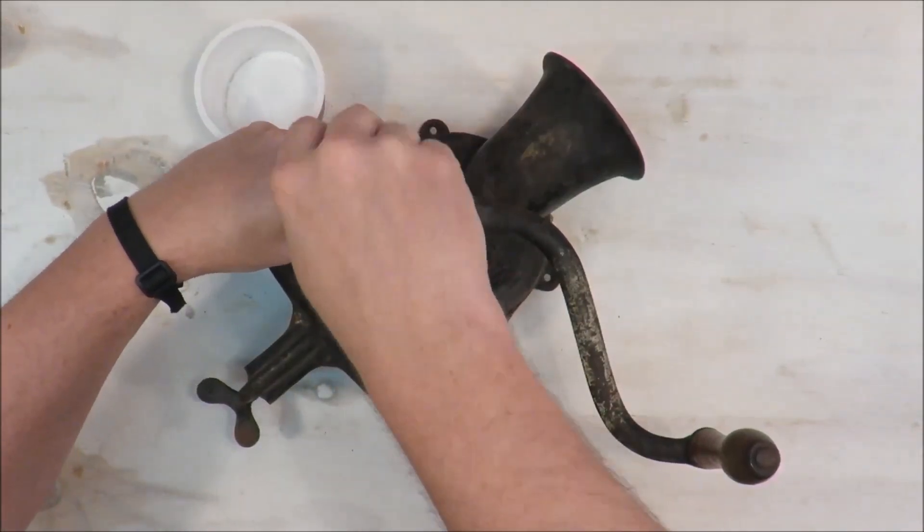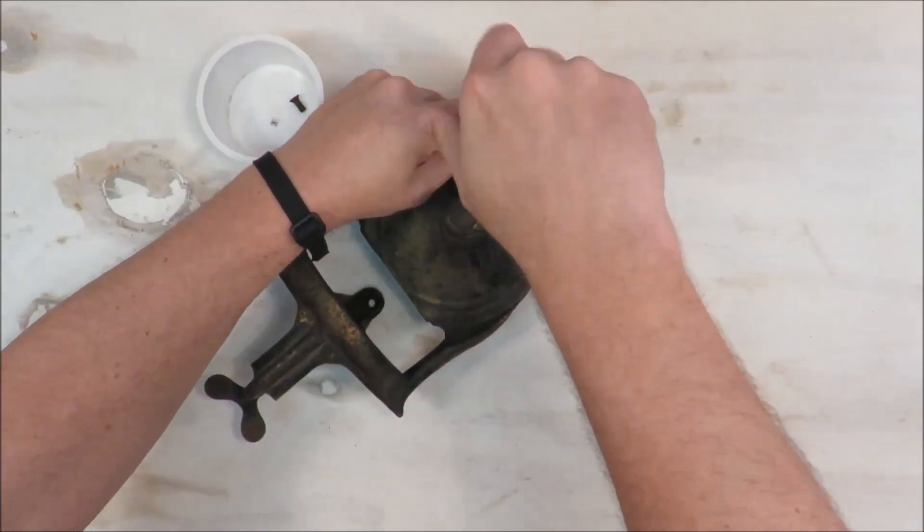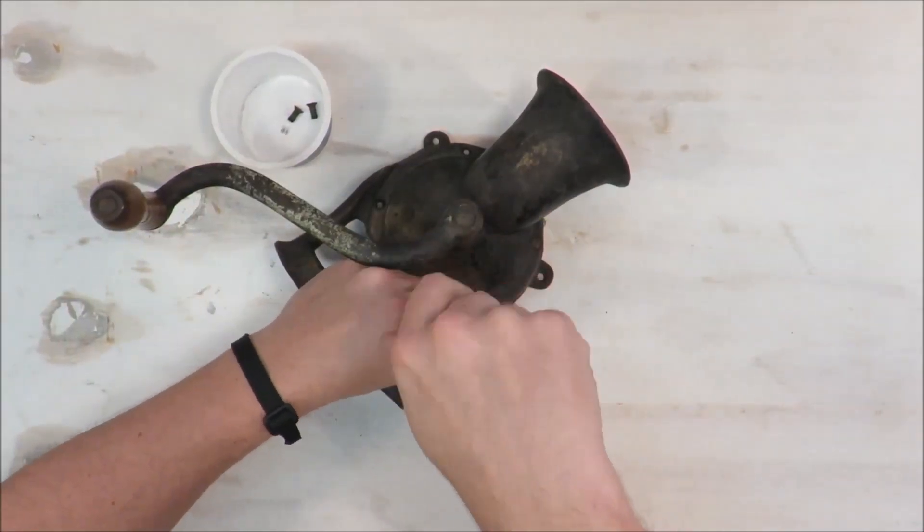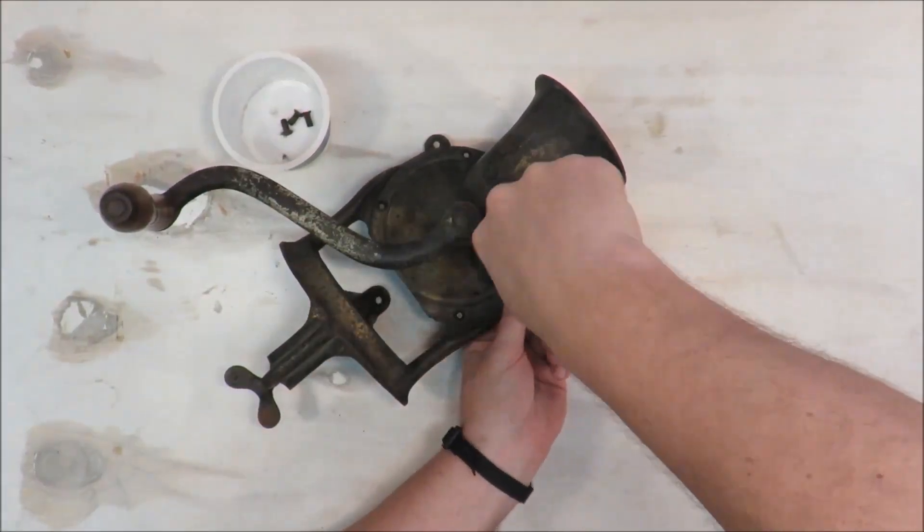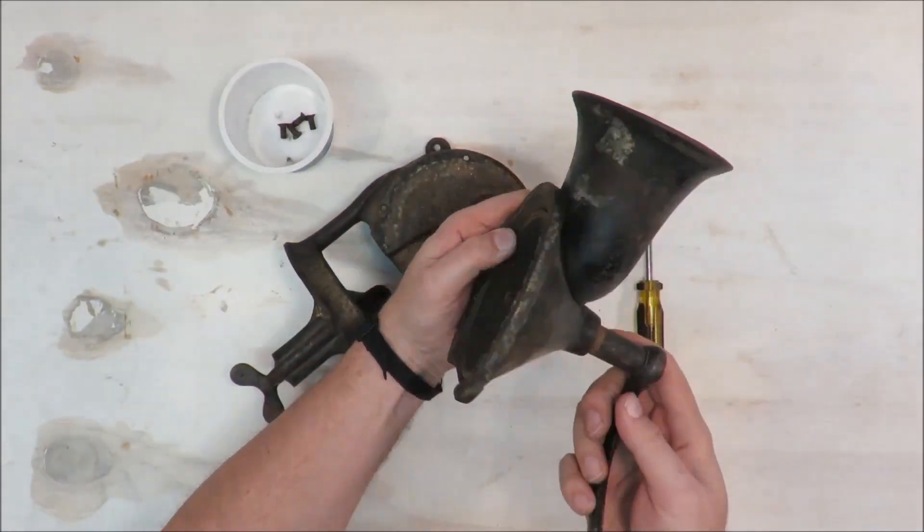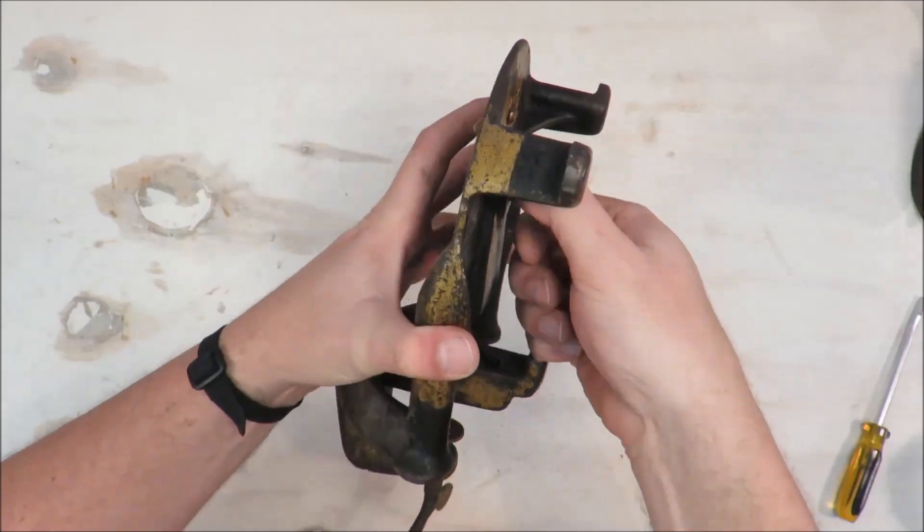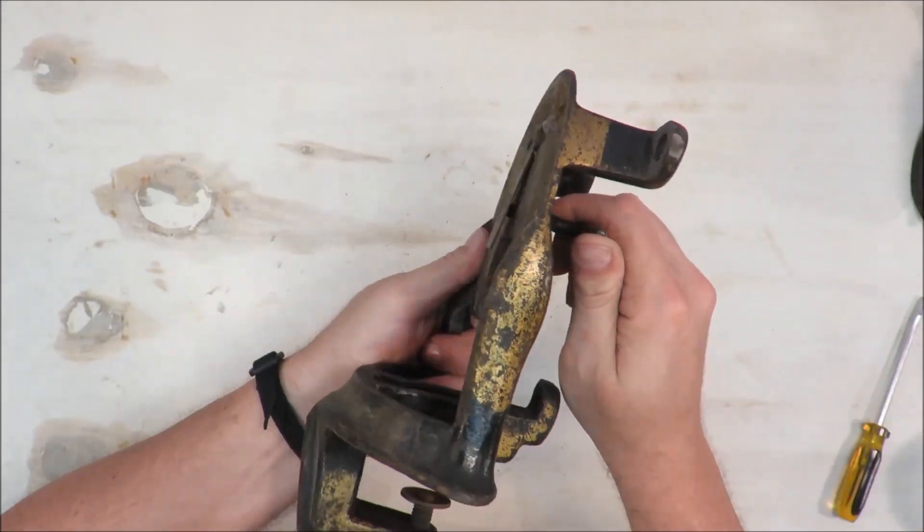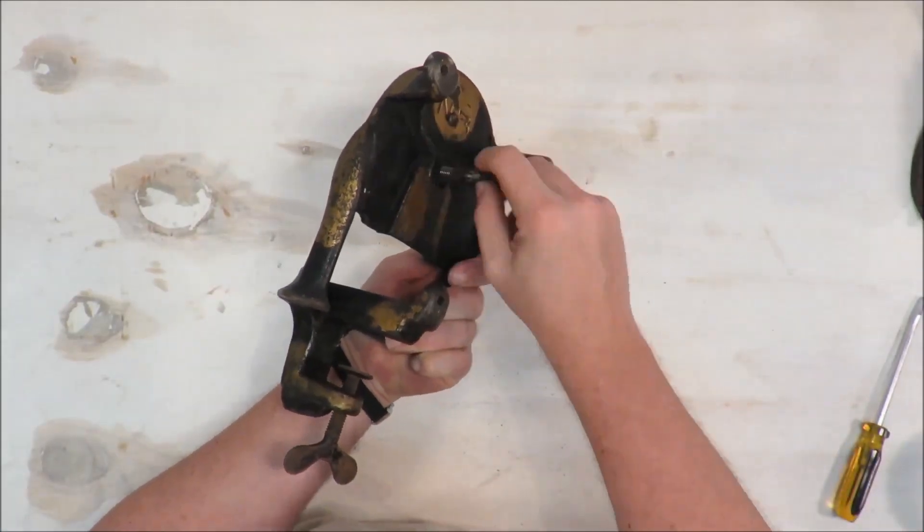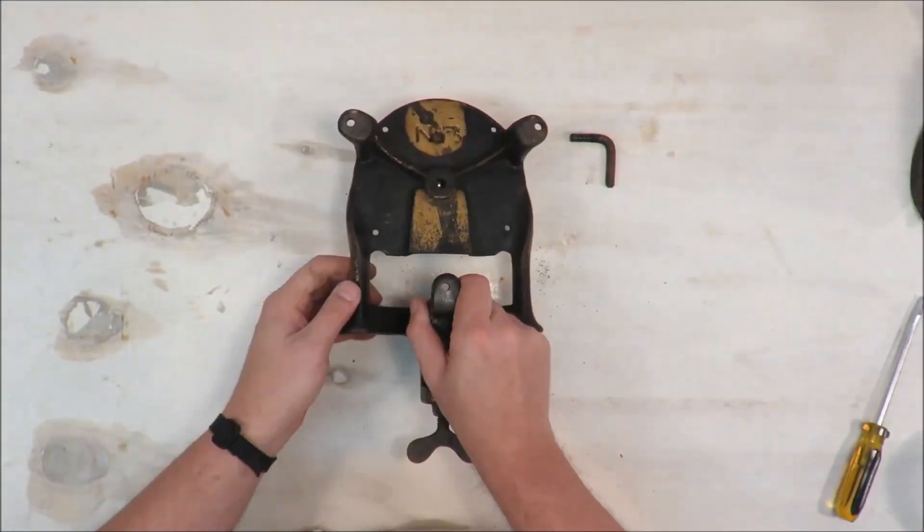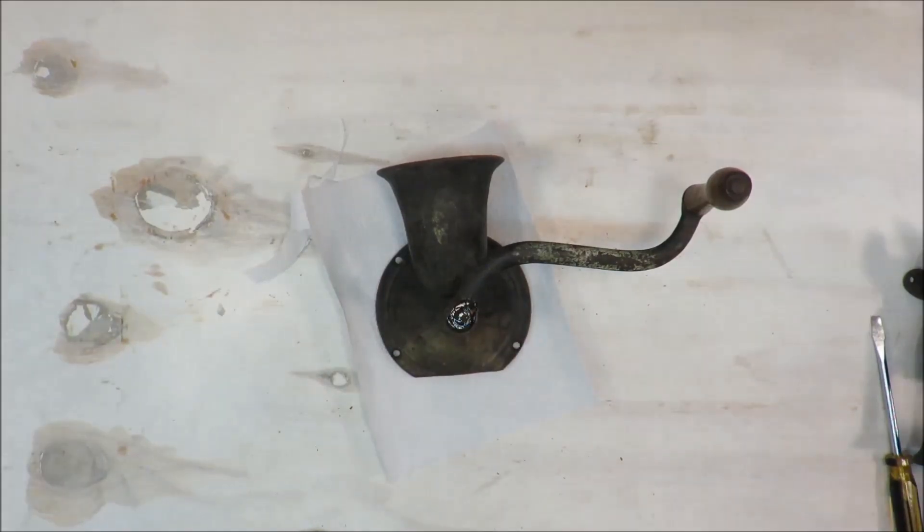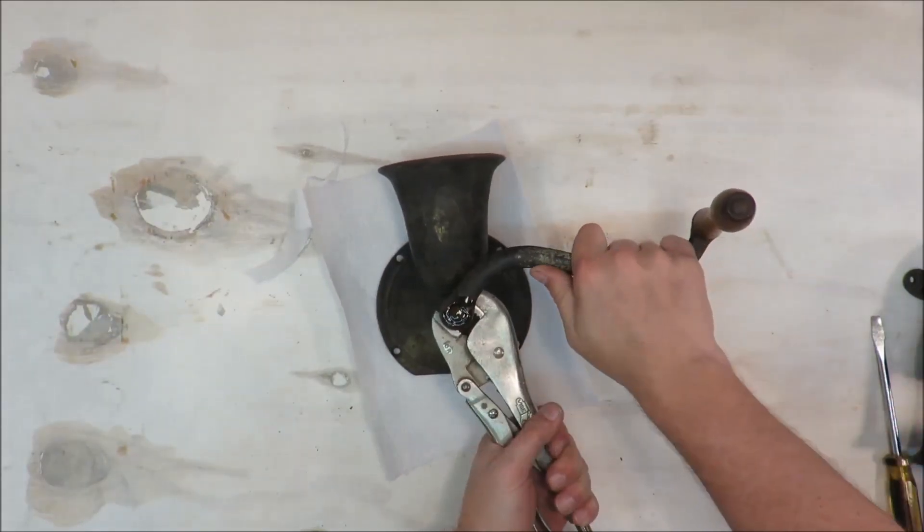I start by stripping the grinder down to its separate parts. The set screw was a bit tight, but it started to move with enough force. The swing arm was so tight that it needed a good dose of oil and a lot of force.